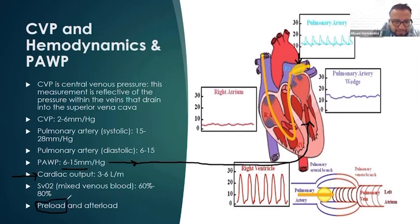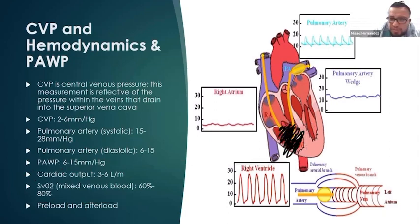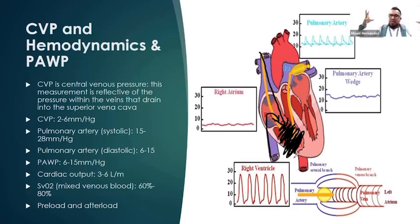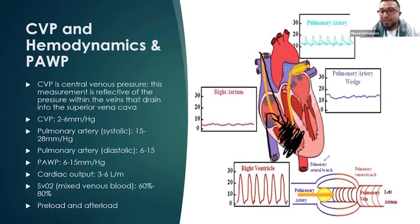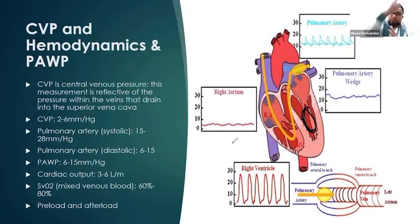Preload describes the amount of stretching the right ventricle undergoes when blood is entering it. If you have a large amount of fluid going into the right ventricle, your preload is high — it's stretching out. If you're dehydrated or losing fluids, your preload is relatively low. Preload is directly related to afterload, which describes how much strength the left ventricle has to exert to push blood out systemically.